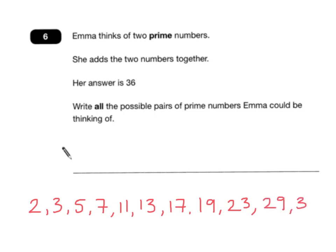So we're just listing them out. I think it helps to list them and then see if you can find pairs. Emma's thinking of 2 prime numbers. She adds them together and her answer is 36.